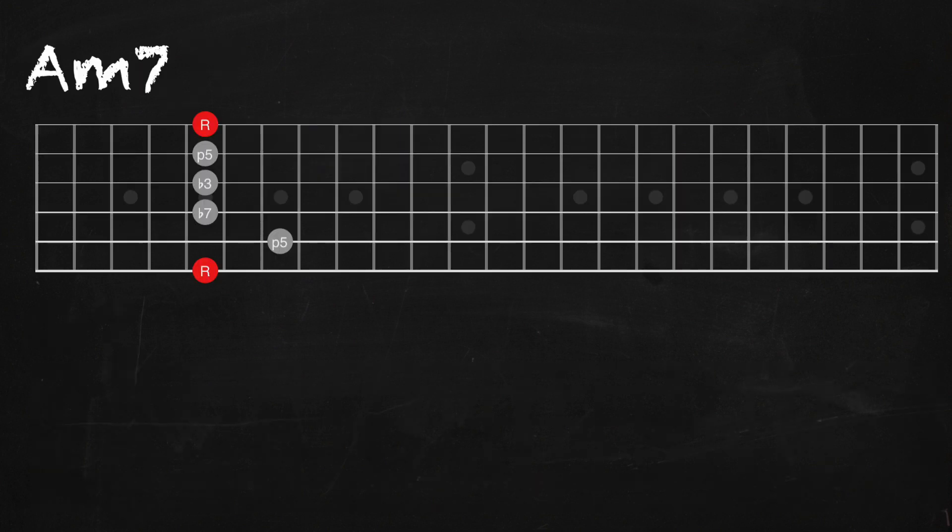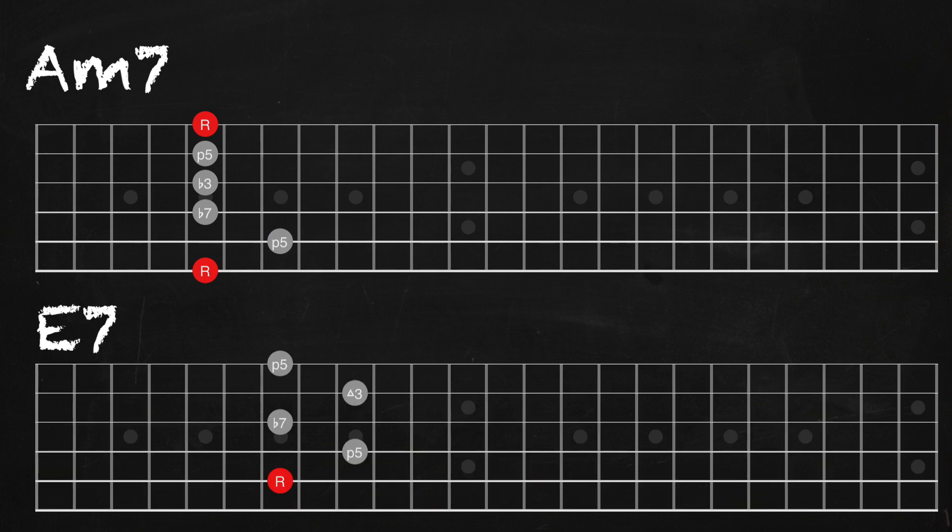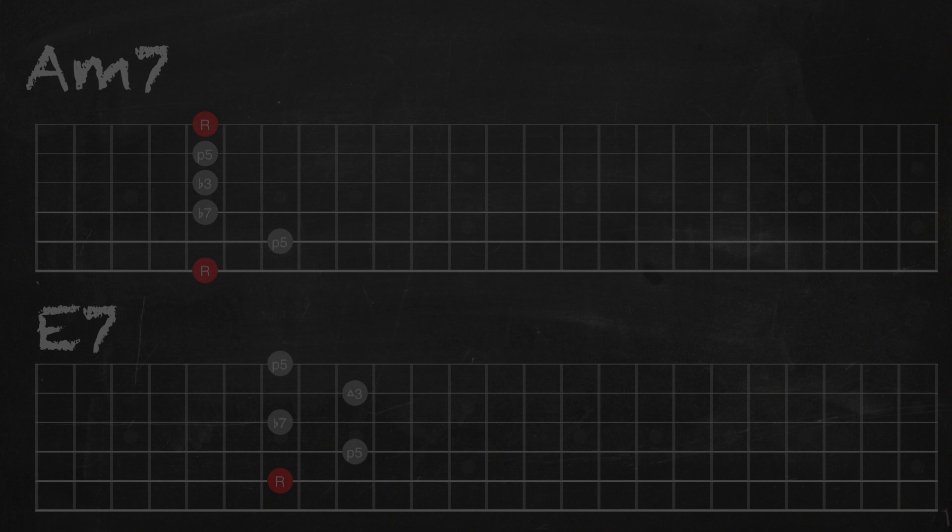Veamos otro ejemplo. La menor 7 en su quinta tiene un Mi, por lo tanto el dominante 7 de La menor va a ser Mi 7. Lo que podemos comprender entonces de aquí en adelante es que estos acordes dominantes 7 pueden resolver en acordes mayores o en acordes menores.